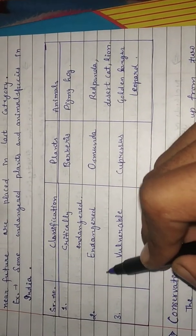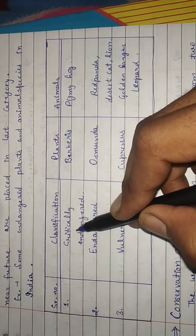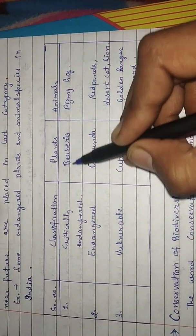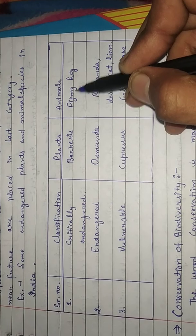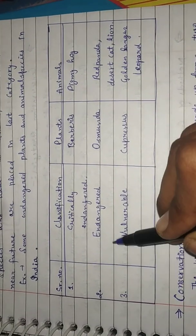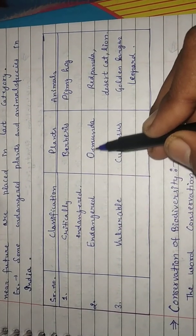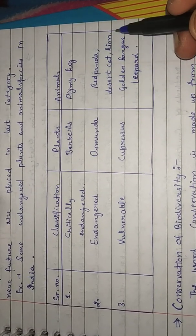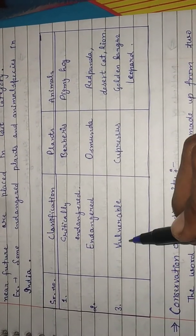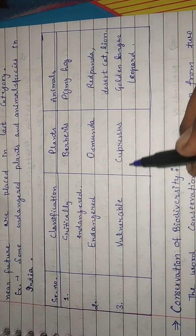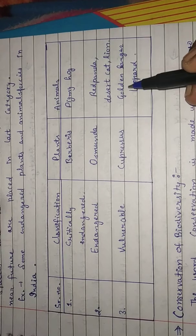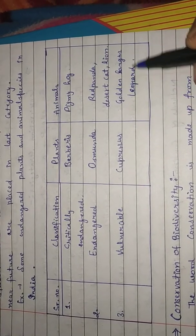Threatened species. First is critically endangered in plants. Plants are barberry and animals are pygmy hog. Second is endangered. Osmunda and red panda, desert cat and lions. And third is vulnerable. Its plant is cypress and animals are golden langur and leopard.